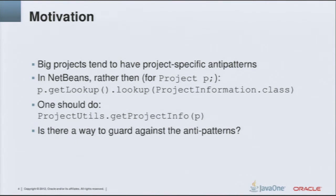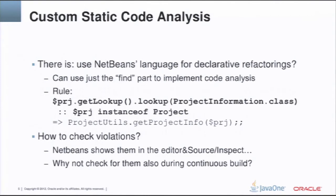The question is: can we guard against such mistakes without writing tons of Java code? And the answer is yes — we probably can, using the NetBeans language for declarative refactorings, where we can use just the part that finds pieces of code matching some pattern. So we can specify a pattern that we want to find and report a warning on code that matches this pattern.